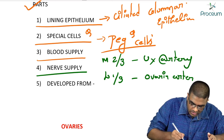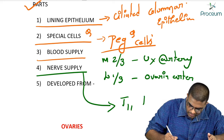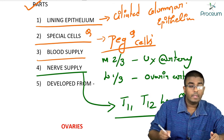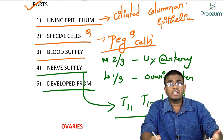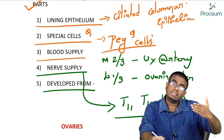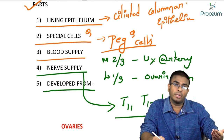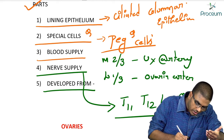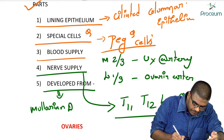Nerve supply for the fallopian tube comes from T11, T12, and L1 segments. As I have already mentioned, the uterus, cervix, upper two-thirds of the vagina, and the fallopian tubes all got their origin from the Müllerian ducts.